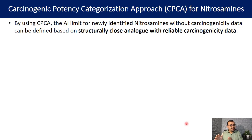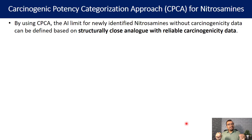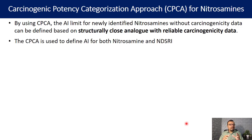By using CPCA, the acceptable intake limit for newly identified nitrosamines without carcinogenicity data can be defined based on a structurally close analog with reliable carcinogenicity data. You need one structure with sufficient carcinogenicity data, and if a similar structure is newly identified in a product, CPCA can be applied. The CPCA is used to define the acceptable intake for both nitrosamines and NDSRIs — nitrosamine drug substance related impurities.